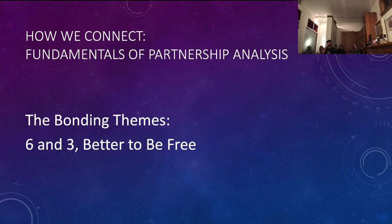Then six and three — better to be free. For most people this is going to be a very challenging relationship. What Ra said about it is this is basically the 60s ideal — the open relationship. We don't have rhymes beyond six and three, but there's five and four, four and five, three and six. The five and four rhyme is 'not a relationship anymore.'